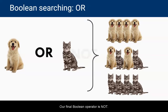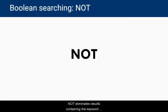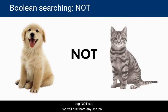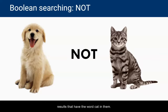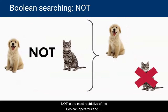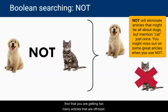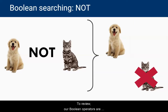Our final Boolean operator is NOT. NOT eliminates results containing the keyword following the word NOT. In the search "dog NOT cat," we will eliminate any search results that have the word cat in them. NOT is the most restrictive of the Boolean operators, and we suggest you only use it as a last resort when you find that you are getting too many articles that are off topic.